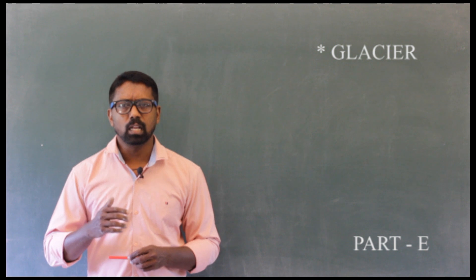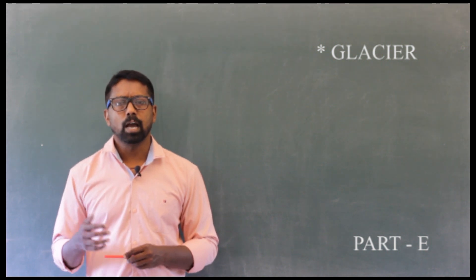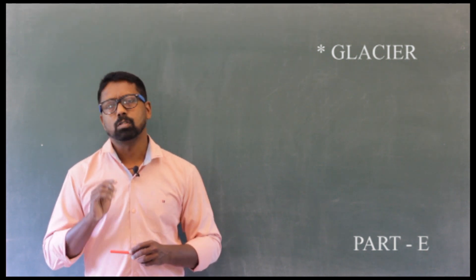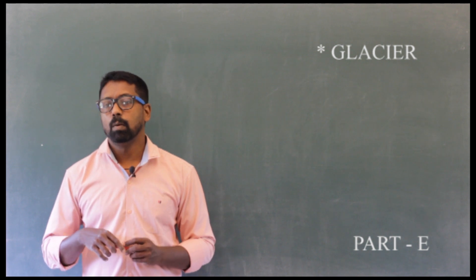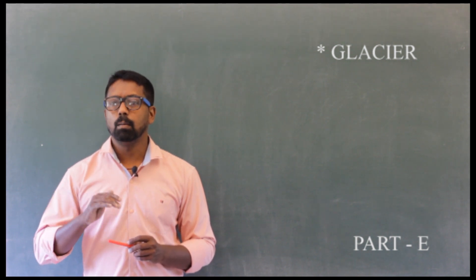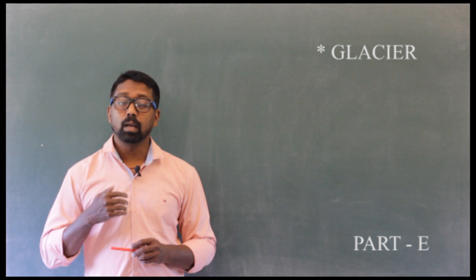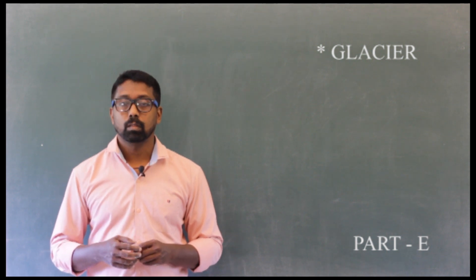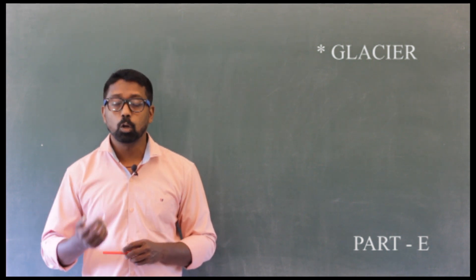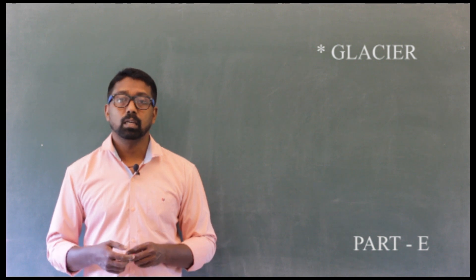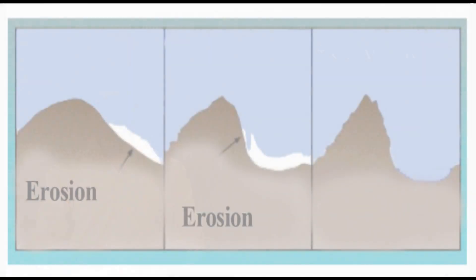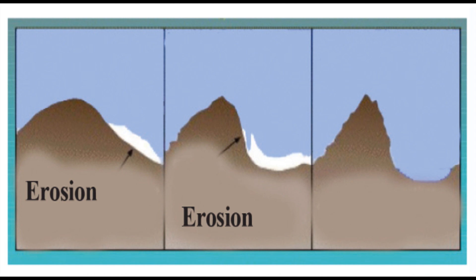Glacial landforms are generally confined to the high mountain ranges and the poles. The movement of a glacier along the mountain slope is depicted in the picture. Observe the changes occurring to the valley at different stages.